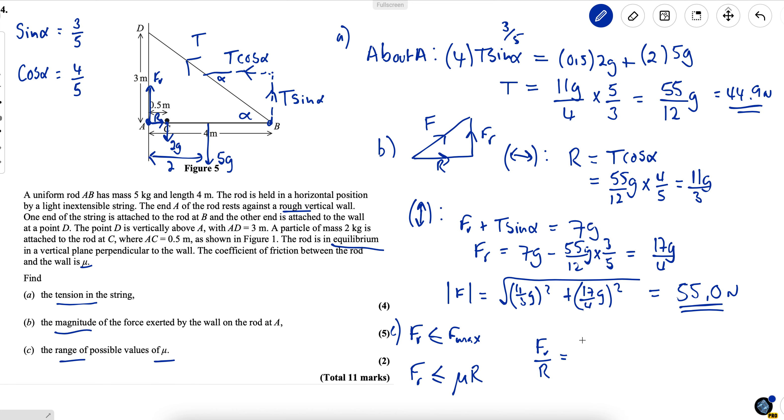Dividing both sides to find mu I need to find a value for mu which is equal to friction, 17 over 4 G divided by reaction which is 11 over 3 G and that gives me 51 over 44 which is equal to 1.16. Unusual there because that's greater than 1 but actually there are occasions when mu can be greater than 1.